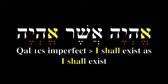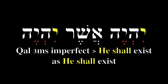Ehyeh asher ehyeh is a first person common singular imperfect conjugation of the verb 'to be,' working in conjunction with the relative particle asher, expressing 'I shall be as I shall be' or 'I shall exist as I shall exist' — f(x) = x. It is just that simple. And if I were to convey this to someone else, I would be compelled to use the third person attestation: yehyeh asher yehyeh.